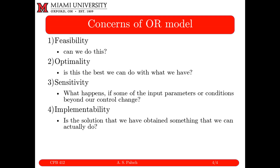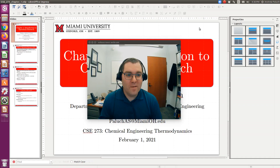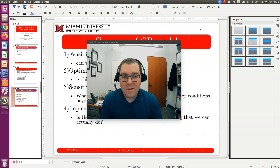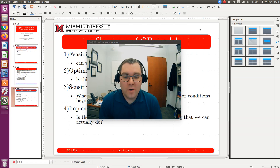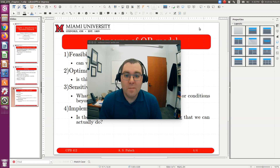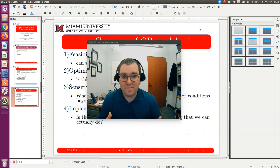So: feasibility, optimality, sensitivity, implementability. There you have it — that's Chapter 1, our introduction to operations research. In our next chapter, we'll move into linear programming and begin to solve some basic optimization problems. Hope that helps!